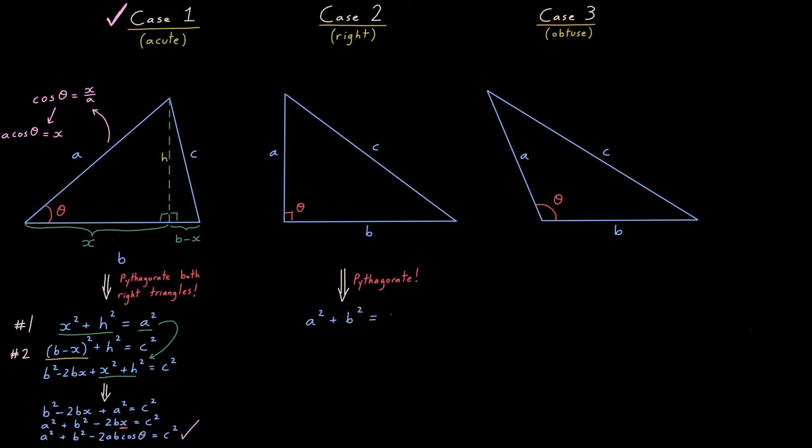Now what about case two? Well it turns out this is the most straightforward one to prove. Don't worry about adding anything to your triangle, leave it as it is, and Pythagoras it as it is. A squared plus B squared is C squared. Now to the left side, subtract a 0.